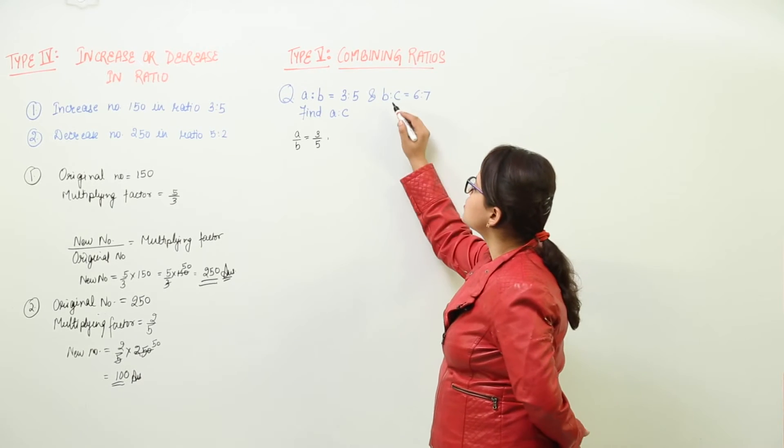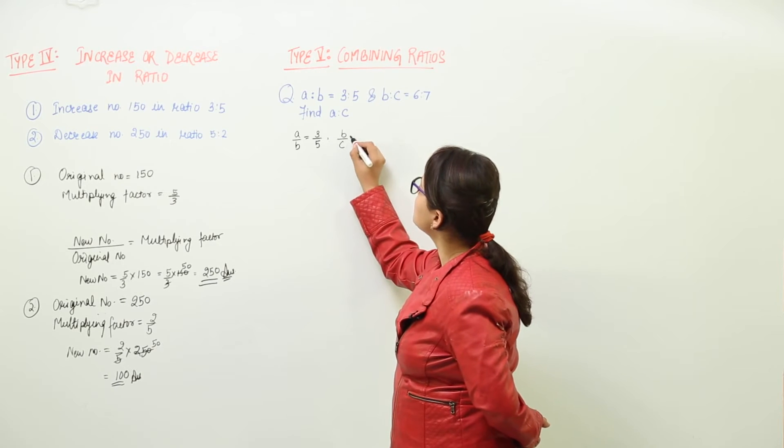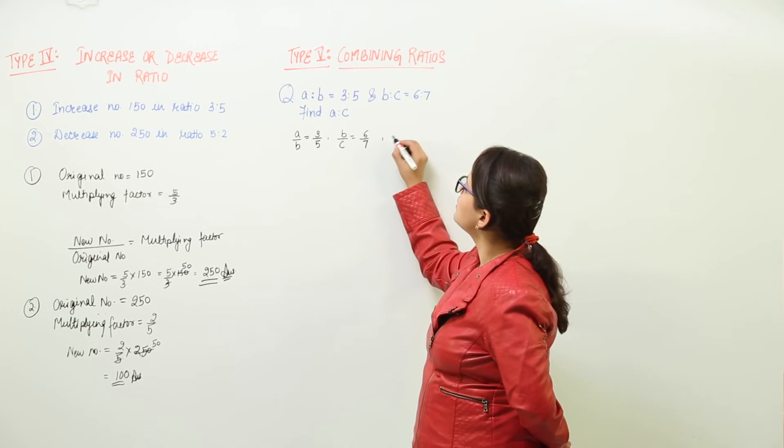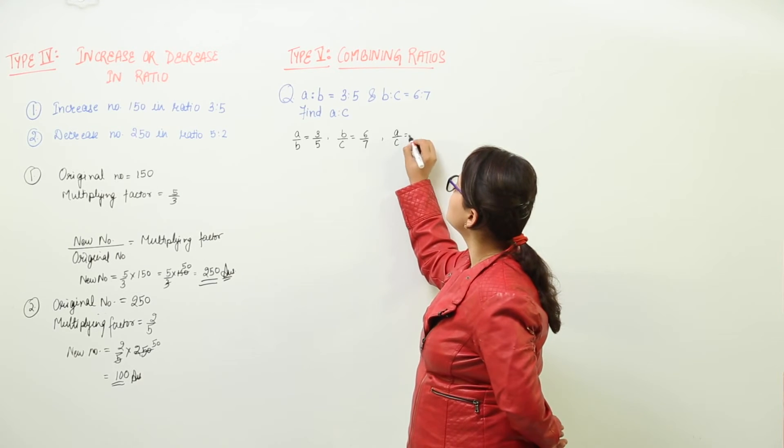Next is the ratio B is to C. We can write that as B upon C equal to 6 upon 7. Now we have to find out the ratio A upon C.